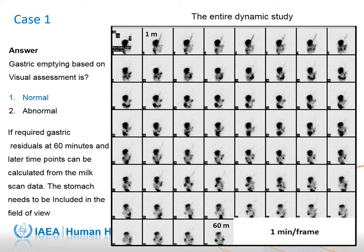Based on visual assessment, there appears to be normal gastric emptying during the first hour. Gastric residual at 1 hour and on later time points — when 2, 3, and 4 hour images are acquired — can be calculated by placing regions of interest on the stomach in the first frame and the last frame or on the late static images. The gastric residual is obtained by dividing the gastric counts at the desired time point, corrected for decay and acquisition time, by the initial gastric counts.